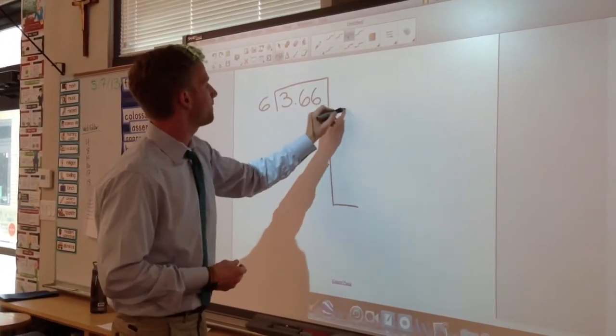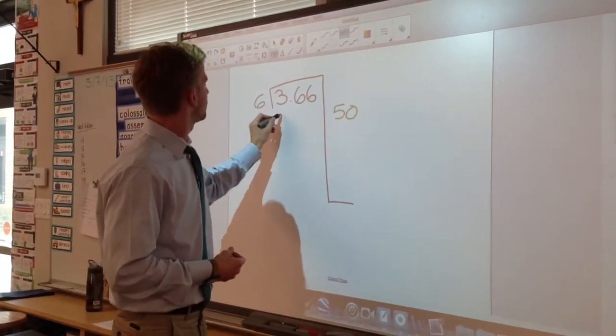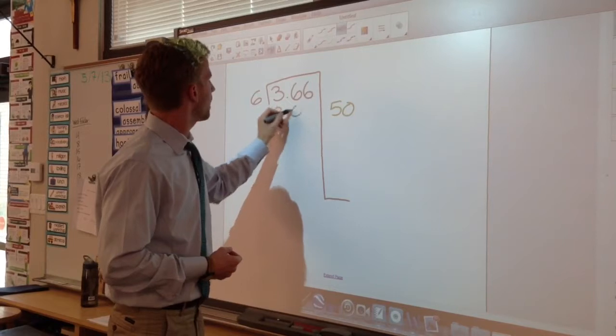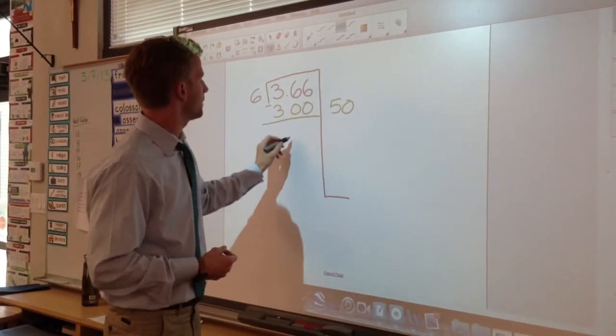I know that 50 times our divisor of 6 would give me 300, and 366 minus 300 is 66.